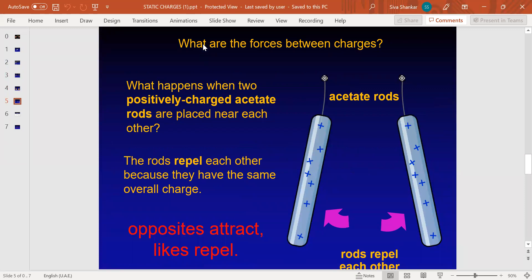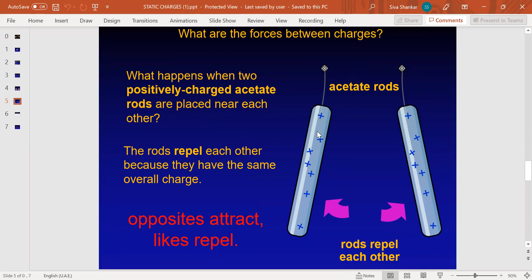We will now see what are the forces between charges. What happens when two positively charged acetate rods are placed near each other? They react like magnets. Like poles repel each other and unlike poles attract each other. If we bring together two positively charged rods or two negatively charged rods, they repel each other. If we bring together one positive and one negative, they attract each other.